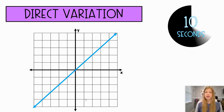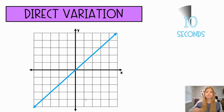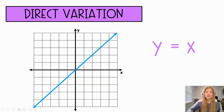Last problem — definitely a direct variation, so we should be able to write this equation. We can see that the slope is one because it's going up one to the right one, up one to the right one. My equation is simply y equals x. Thank you so much for watching — I hope it helps, bye!